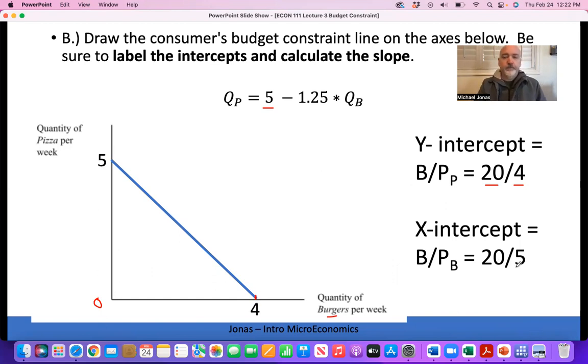So we just plug in the values, the Y intercept of 5, the X intercept of 4, connect the dots, and there is your sketch of the budget constraint. When you're asked for the slope, that's the value we've already calculated, the rate of tradeoff between the two goods, the negative 1.25 in this case.